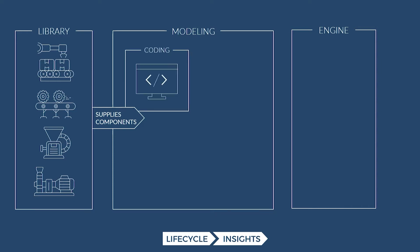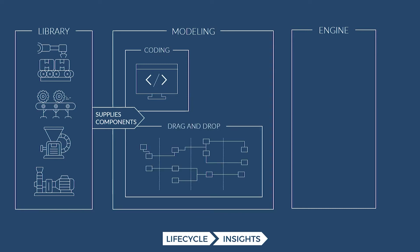There are actually multiple ways you can build up your model. You can use a coding interface — if you're more technical, you can certainly use that to build up the system's model. Another way, which you see a lot today with system simulation tools, is a drag-and-drop interface where you drag components onto a canvas and connect the inputs to the outputs of one another, and that's another way you can run your simulation.